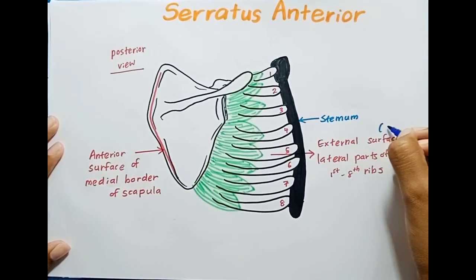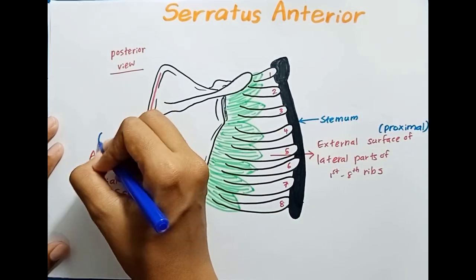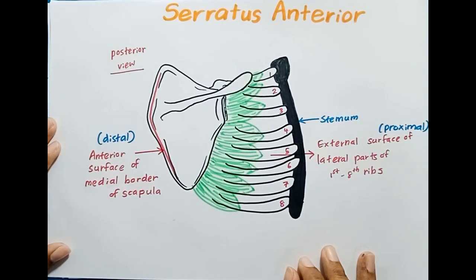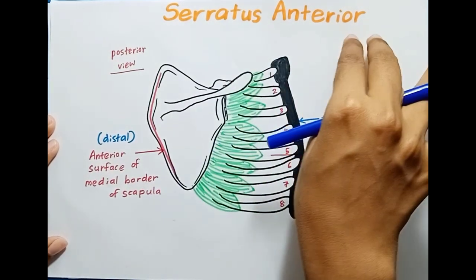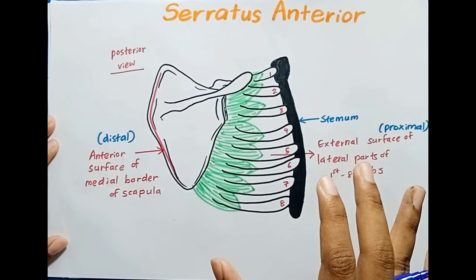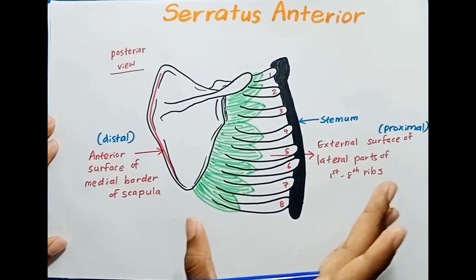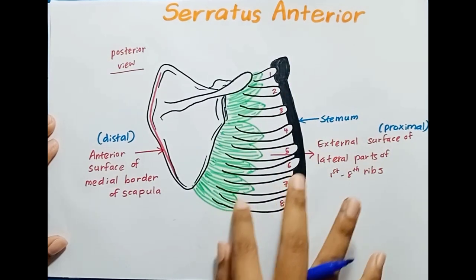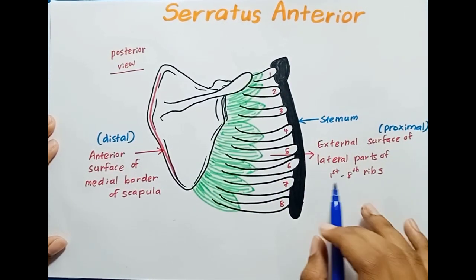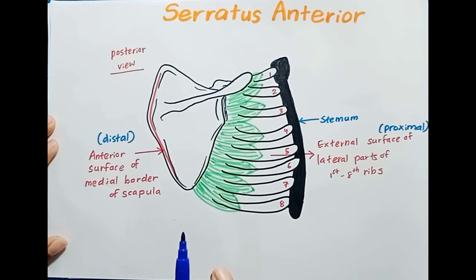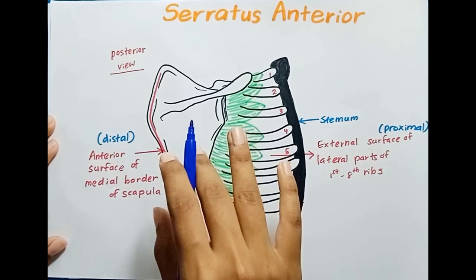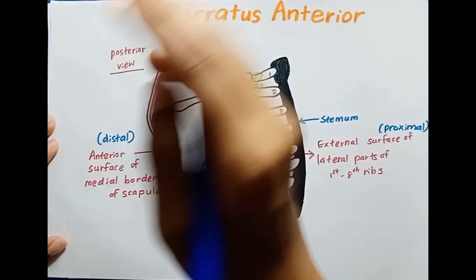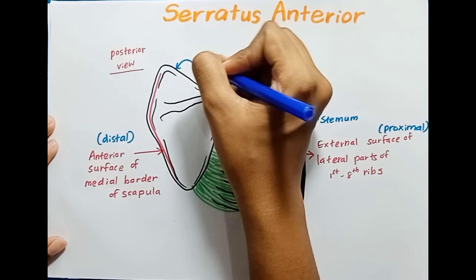So this is the proximal attachment and this is the distal attachment. To recap: the serratus anterior is a fan-shaped muscle lying along the lateral aspect of the thorax. The sternum is present medially, and the lateral parts of the ribs are the origin. This muscle gets its origin from the first to eighth ribs on the external surface, and attaches to the anterior surface of the medial border of the scapula.